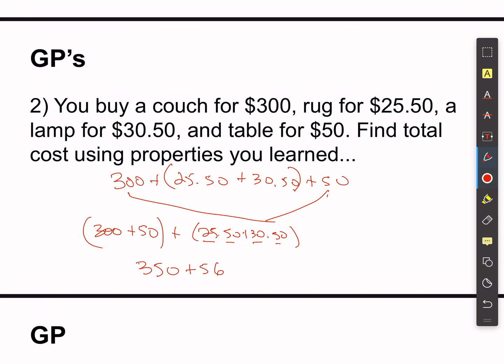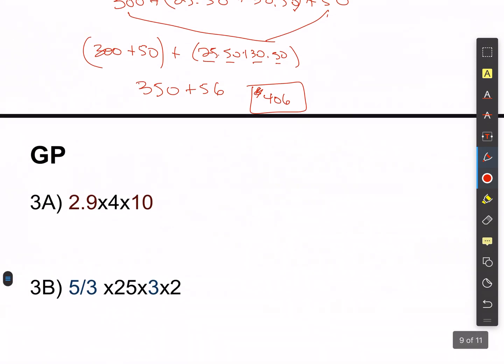Adding 350 and 56 together gives $406. This is also in your guided practice in your textbook — they show you how to do a couple more problems like this if you want practice before starting your homework.